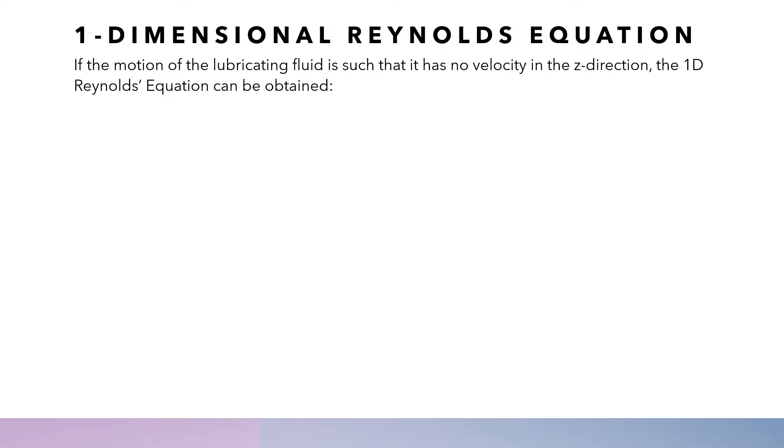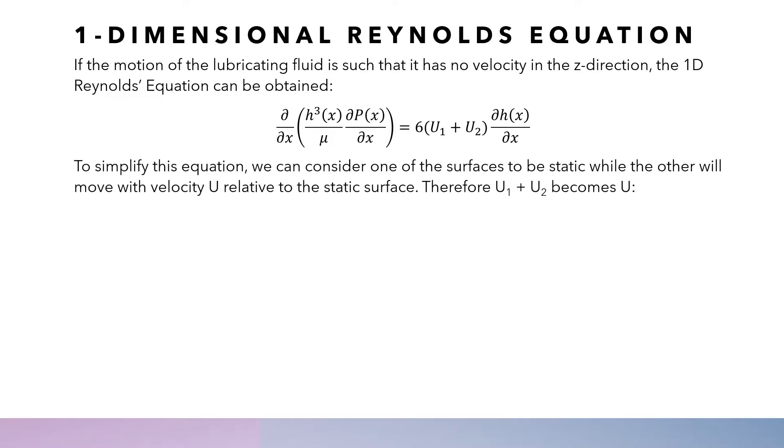If the motion of the lubricating fluid is such that it has no velocity in the Z direction and only in the X direction, the one-dimensional Reynolds equation can be obtained. To simplify this equation, we consider one of the surfaces to be static while the other moves with velocity U relative to the static surface.